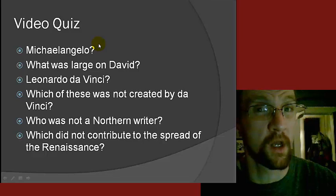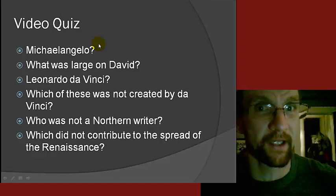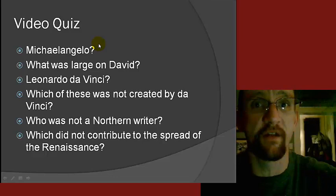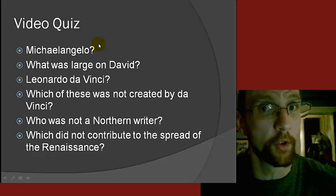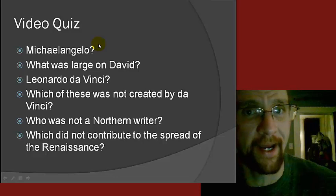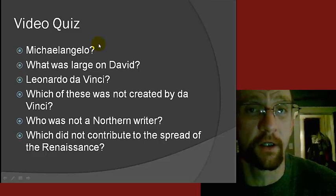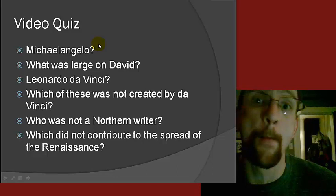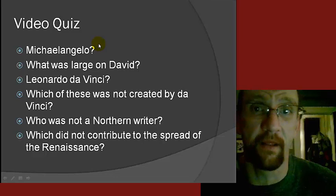Number three: Leonardo da Vinci — Renaissance or medieval? A, Renaissance; B, medieval. Number four: which of the following was not created by Leonardo da Vinci? Was it A, the Mona Lisa; B, the Last Supper; C, the Vitruvian Man; or D, the Dome of St. Peter's Basilica?